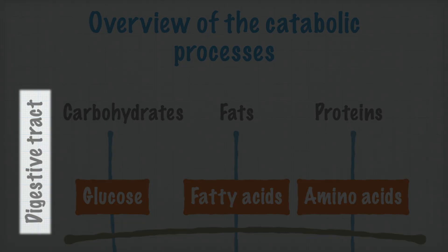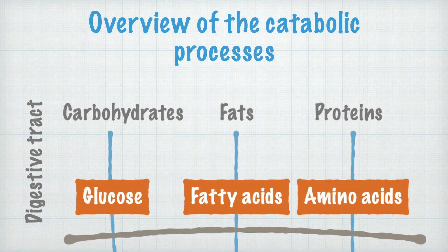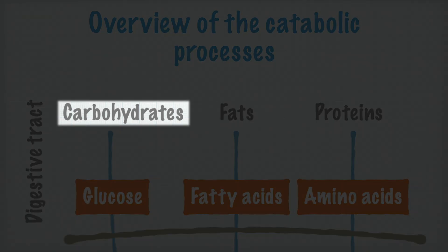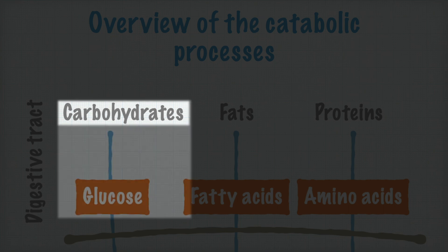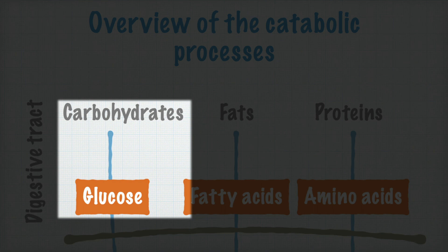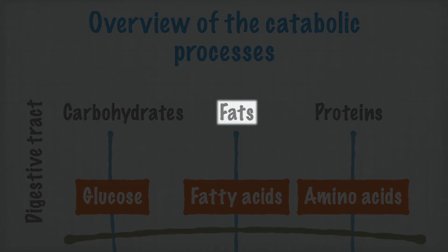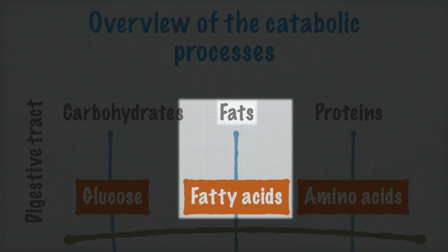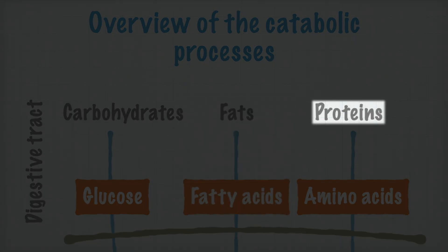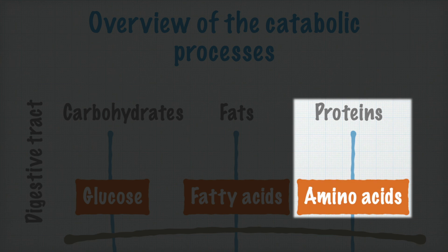First of all, this represents what happens in the digestive tract, from the mouth to all the intestines. In the digestive tract, large carbohydrates, like for example starch, are broken down into simple carbohydrates, mainly glucose. And those monosaccharides that are not glucose are converted into glucose. Fats are broken down into glycerol and fatty acids, and proteins are broken down into amino acids.